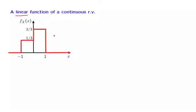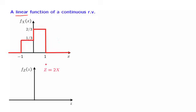We start with a random variable x that has a PDF of the form shown in this figure, so that it is a piecewise constant PDF. We then consider a random variable z, which is defined to be 2 times x. The random variable x takes values between minus 1 and 1, so z takes values between minus 2 and 2.